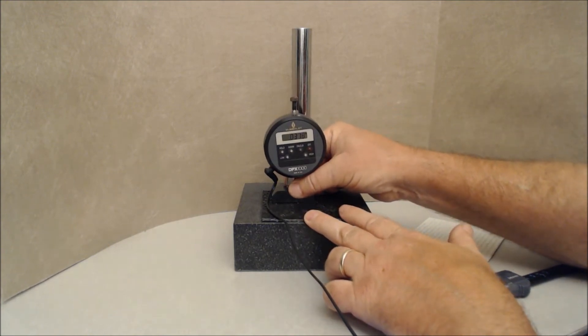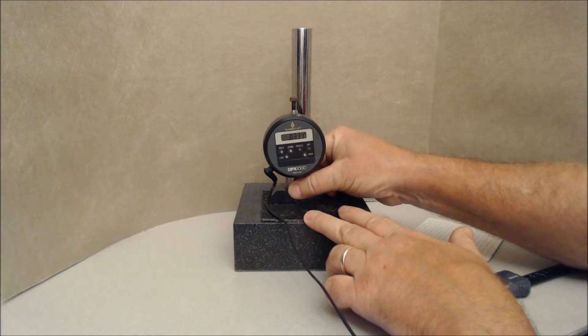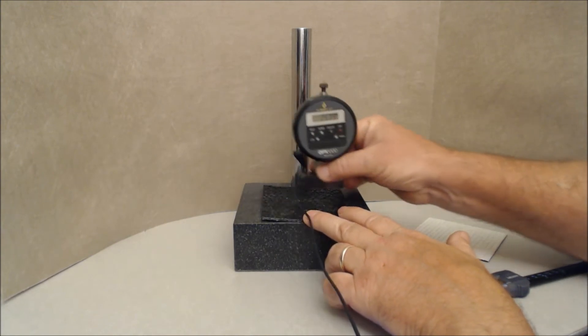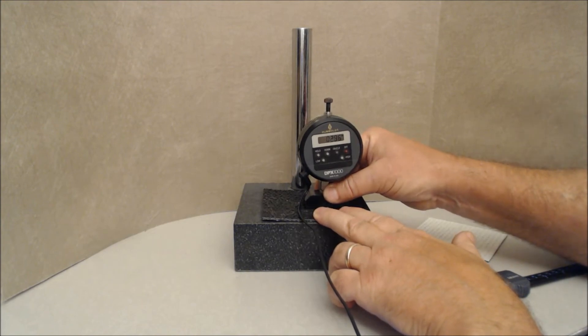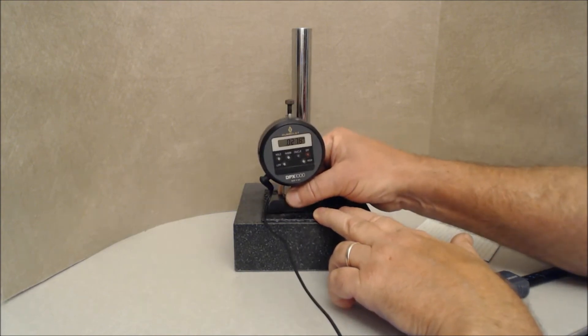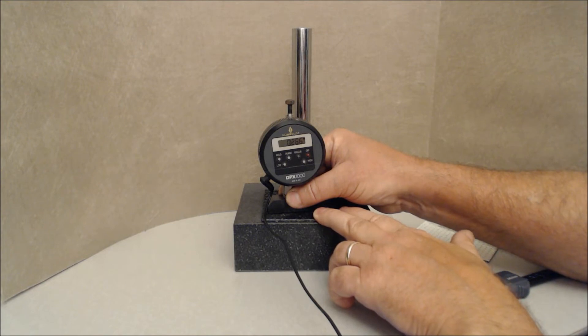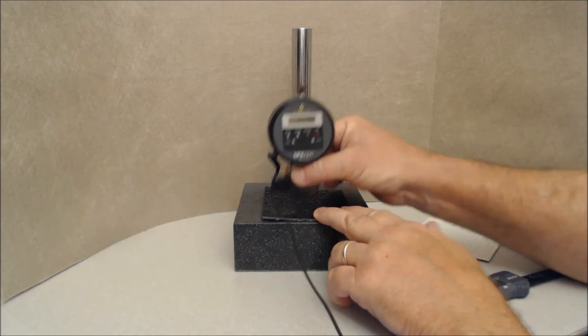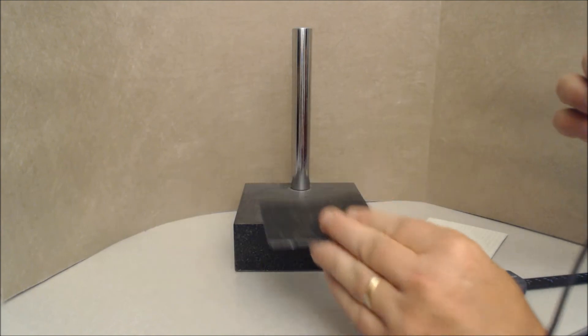The first reading we have, or we're finding the valley here. So 33.3. The second reading, 29.6. And then the third reading, 26.6. So 33.3 is the maximum reading for this particular sheet.